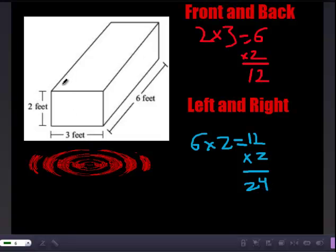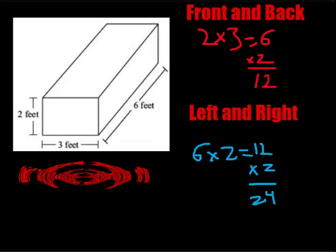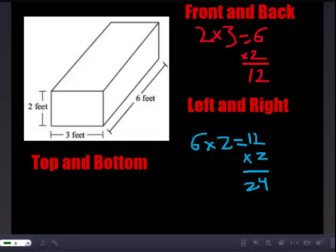Now, we just need the top and the bottom. So, the top and the bottom of this shape would be 6 here and 3 here. So, it would be 6 times 3, which would give you 18. And, again, there are 2 of those, so that would give you 36.